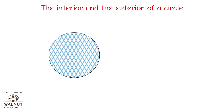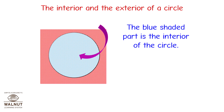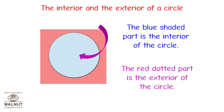Look at the circle. The inner part of a circle is called the interior of the circle. The blue shaded part is the interior of the circle. The outer part of a circle is called the exterior of the circle. The red dotted part is the exterior of the circle.